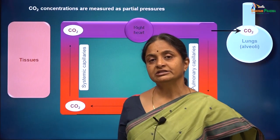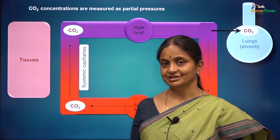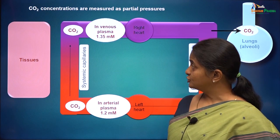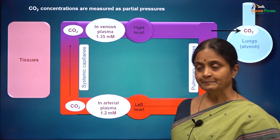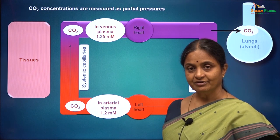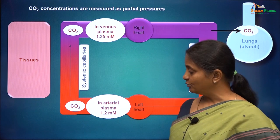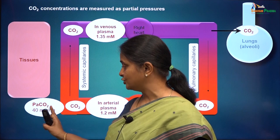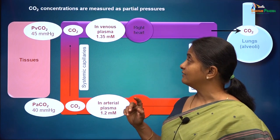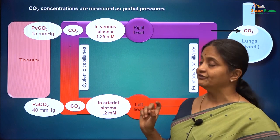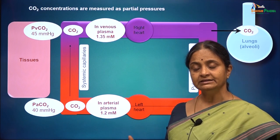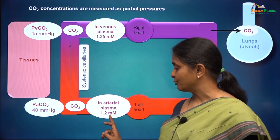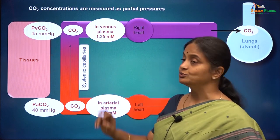Now we will see how carbon dioxide concentrations are measured in blood. The arterial CO2 concentration is 1.2 and the venous concentration is 1.35 millimoles per litre. Blood gas reports give partial pressure of carbon dioxide — PaCO2 at 40 mmHg for arterial and 45 mmHg for venous blood. Using the conversion factor of 0.03: 40 × 0.03 = 1.2 and 45 × 0.03 = 1.35.